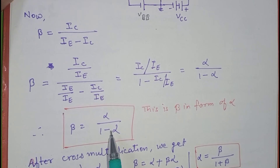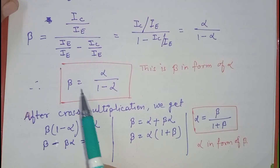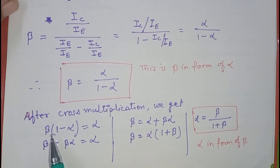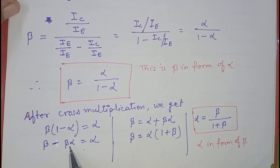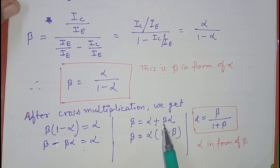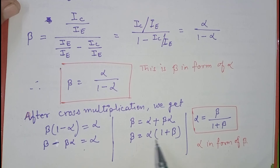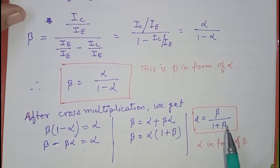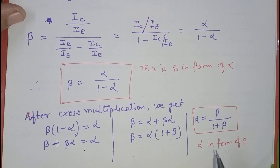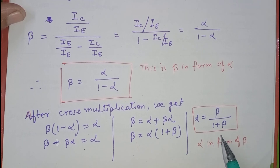This is the equation of beta in terms of alpha. After cross-multiplying, we get beta times (1 minus alpha) equals alpha. Expanding and rearranging, beta equals alpha plus beta·alpha. Taking alpha as common and moving terms, we get alpha equals beta upon 1 plus beta. This equation shows alpha in terms of beta.